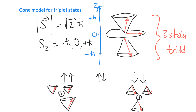The third triplet state has one electron up and one down. The up electron precesses on an upward cone, while the down electron precesses on a downward cone, but they are kept in phase — when one points to the right, the other does too. The vertical z-components cancel exactly, but the x/y components reinforce because they precess in phase together, giving a non-zero total vector. This is the m_s = 0 triplet state.